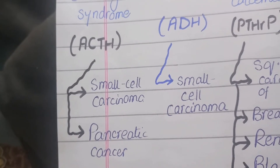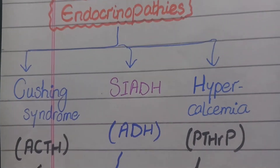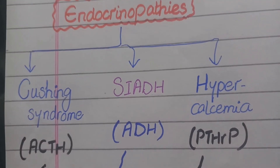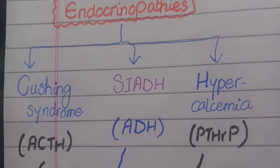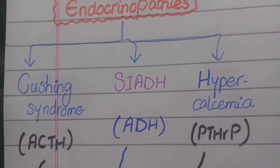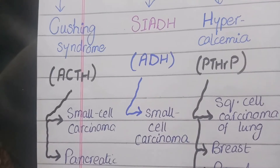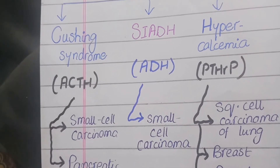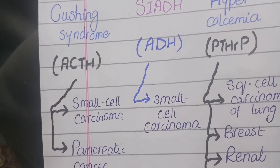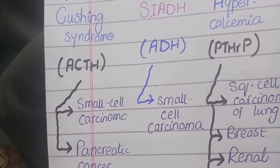Small cell carcinoma of the lung and pancreatic cancer cause Cushing syndrome. The second example of an endocrine-related paraneoplastic syndrome is SIADH — syndrome of inappropriate ADH secretion — which is caused by ectopic release of antidiuretic hormone. The notable tumor that causes this syndrome is small cell carcinoma. So small cell carcinoma causes two main types of paraneoplastic effects: Cushing syndrome and SIADH.